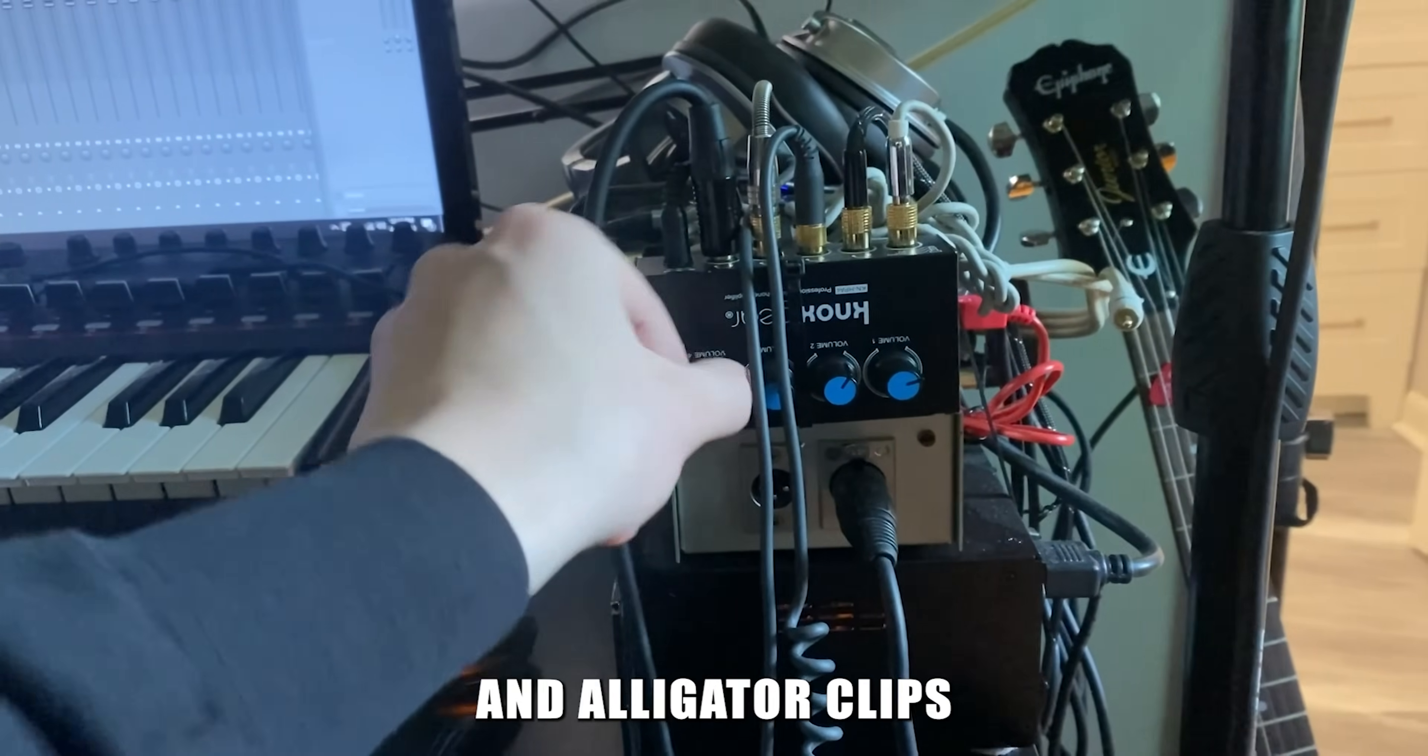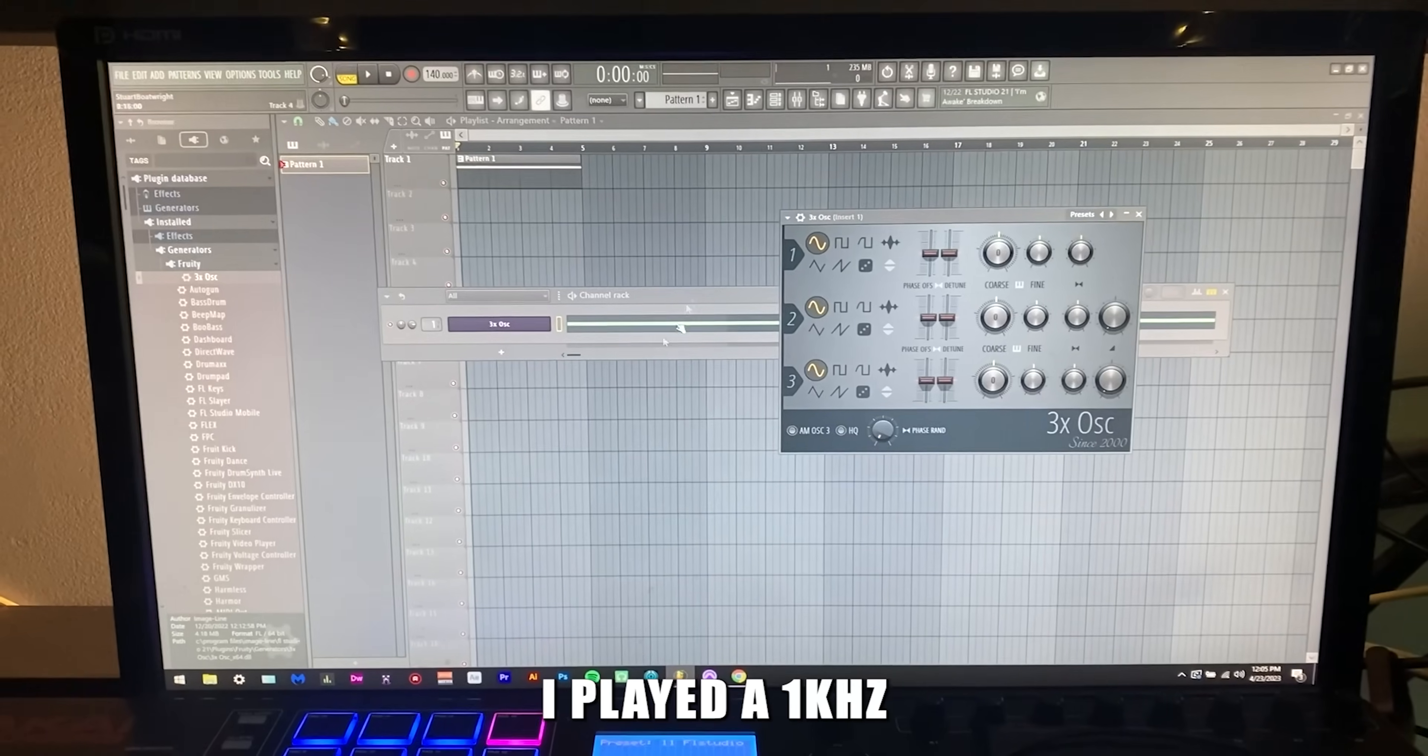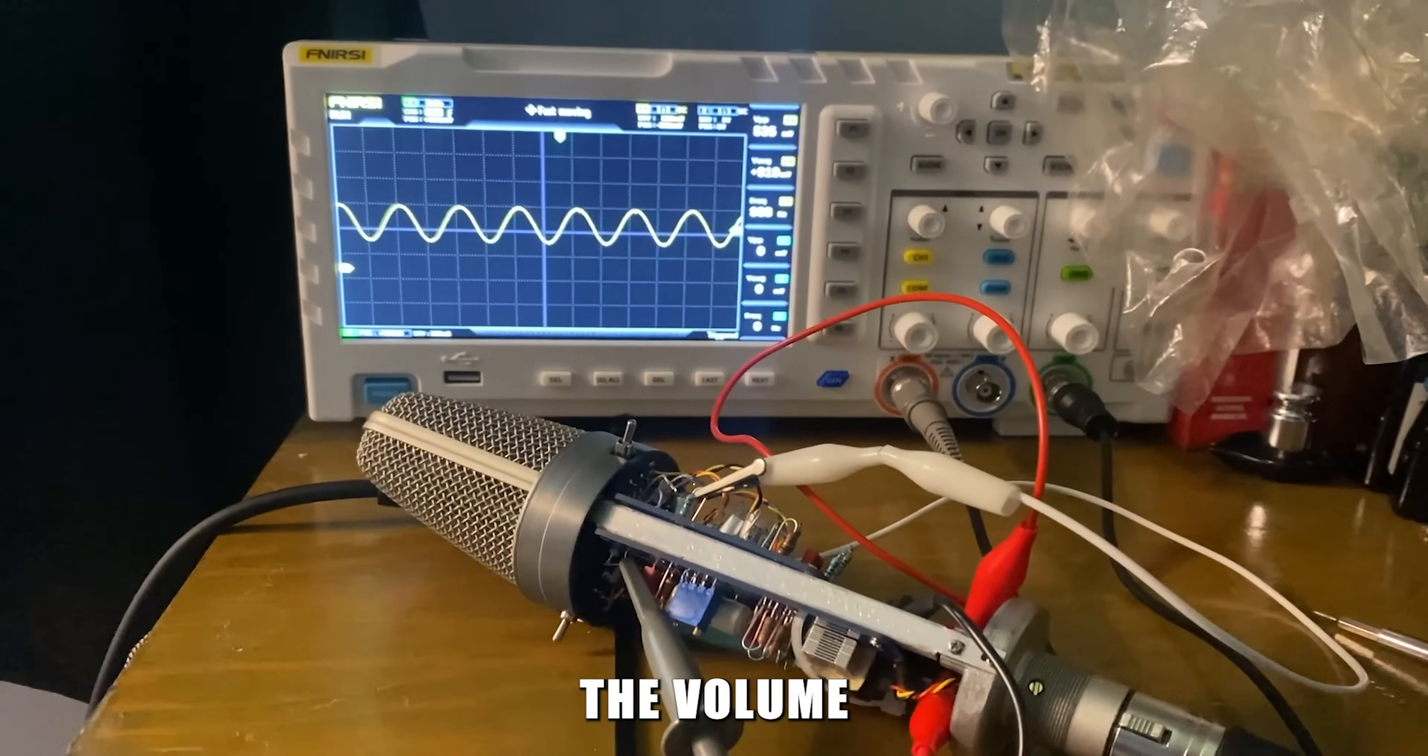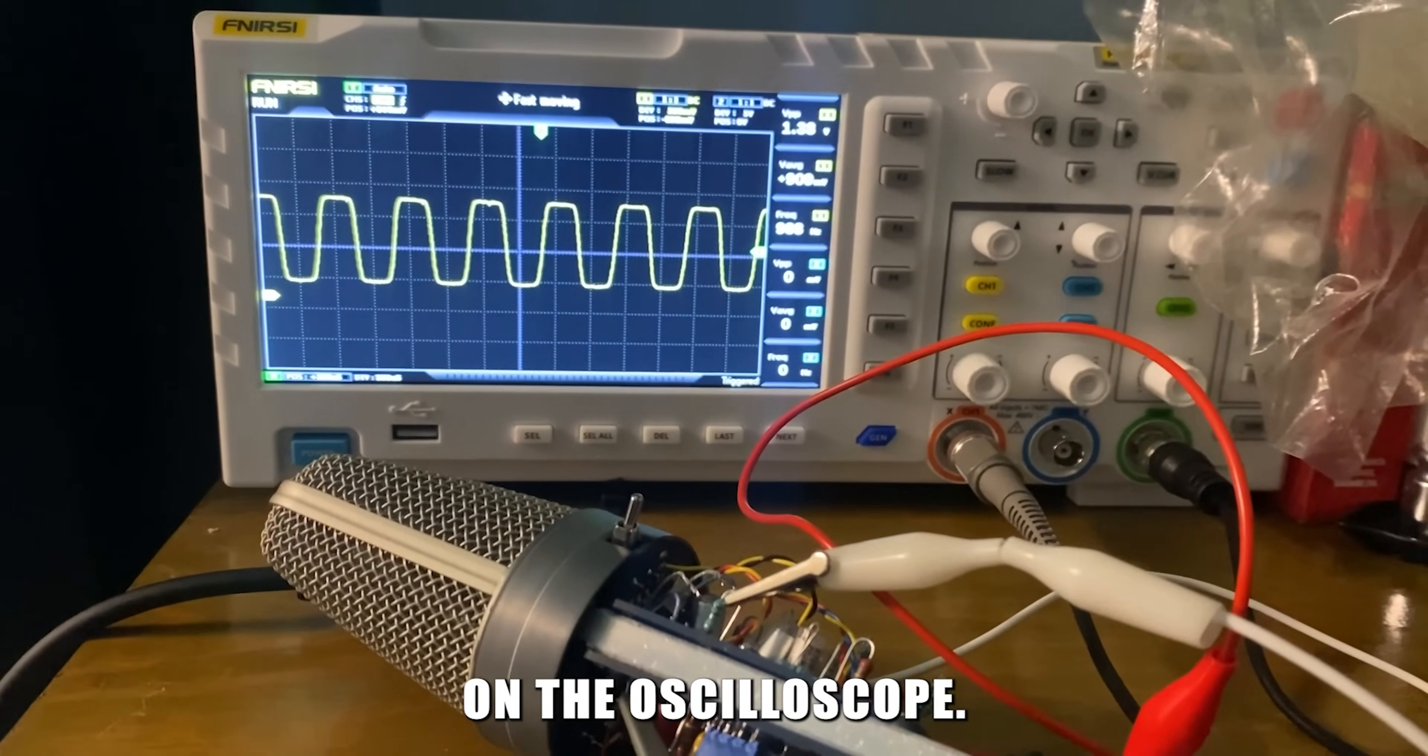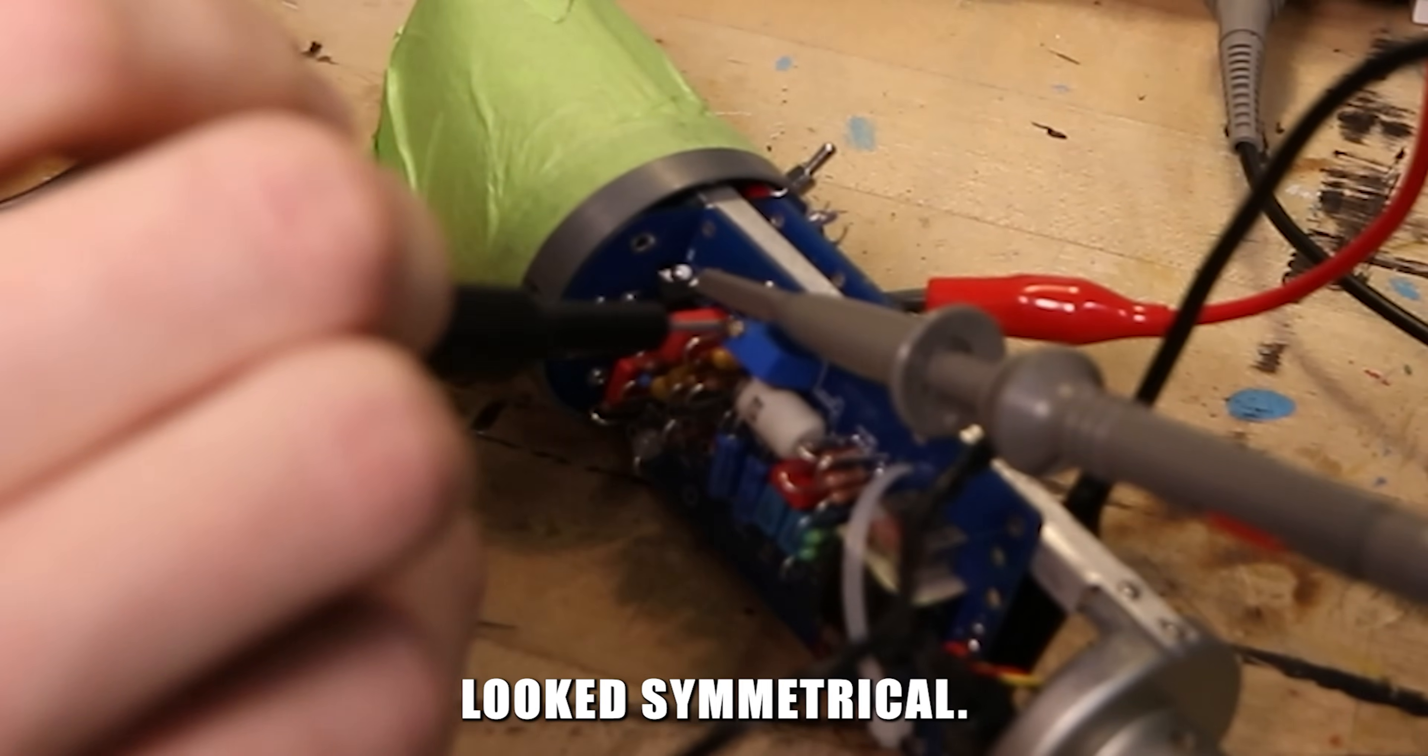Then I used a quarter inch cable and alligator clips to inject an audio signal at R6. I played a 1kHz sine wave in my DAW and then increased the volume until the waveform started to clip on the oscilloscope. Then I slowly adjusted the potentiometer until the clipping looked symmetrical.